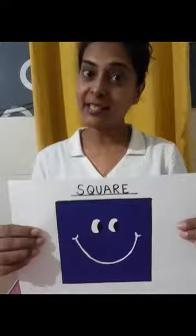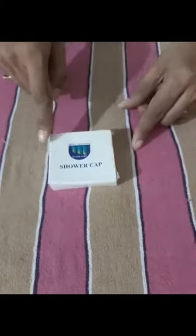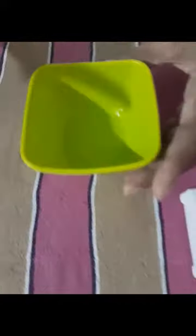Now let us see the objects. This is a box — a square box. All four sides are equal. And this is a square bowl. All four sides are equal.